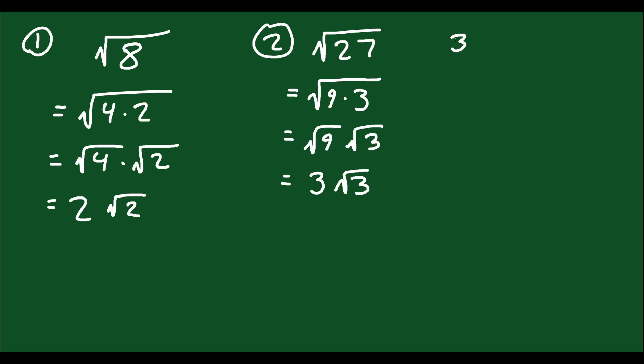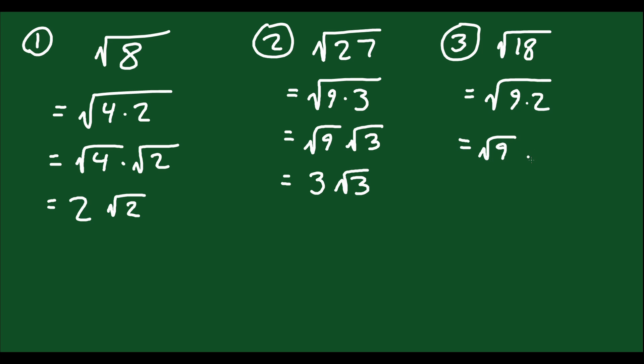Let's do square root of 18. Think of numbers that multiply to 18. 1 times 18 doesn't help. 6 times 3 — neither of those are perfect squares, so you can't square root them. But what about 9 and 2? You can take the square root of 9, so this is the square root of 9 times the square root of 2, which equals 3√2.